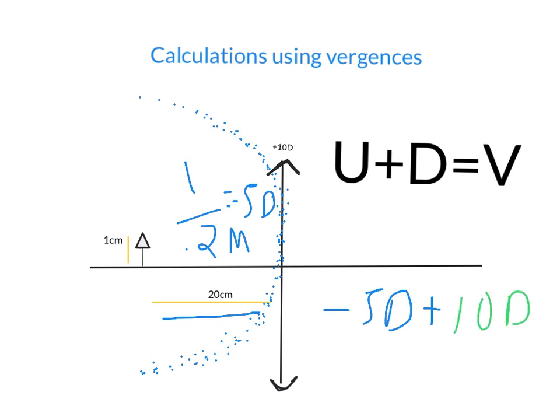And the V is very simple. You add the two numbers, you get plus 5 diopters. That's the V.